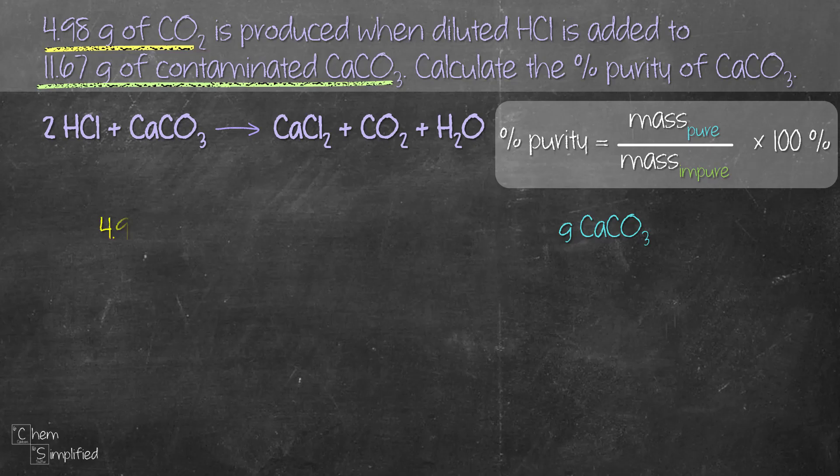We start with 4.98 grams of CO2 and then we convert it to moles of CO2. From the moles of CO2, we can find the moles of CaCO3 and from moles of CaCO3, we find the grams of CaCO3. We can't go straight from grams of CO2 and jump straight to grams of CaCO3. We have to go through these steps. So it's going to take us three steps in total.